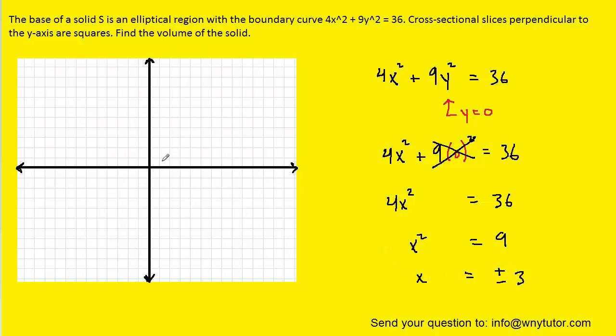So we have two x-intercepts. We can go over here, and maybe we'll make the scale a little bit spread out. So we'll call this 1, this 2, and this 3, and then same thing on the negative side. And we'll plot the two x-intercepts, one at positive 3, and then the other at negative 3.